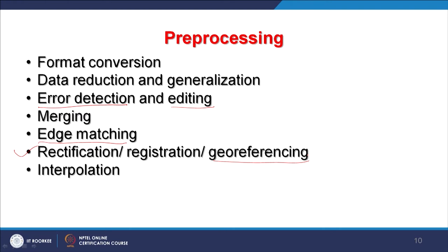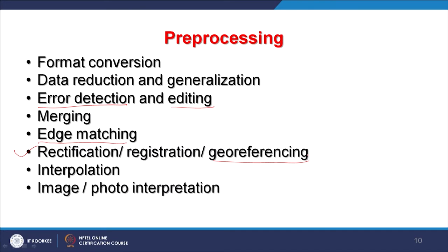Image or photo interpretation is another important preprocessing step. Unfortunately, in recent years people have given less emphasis on image interpretation, but analyzing satellite data or aerial photographs and performing image interpretations is very important. One should not leave everything for machines to do, since machines do not have intelligence — only humans have better intelligence. Applying interpretation keys and performing interpretation will give very good results in projects.